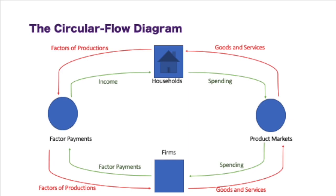Another thing to note here are product markets. Product markets are going to be like a store or the mall where you can go in and purchase different goods. Here you can see that households are spending in the product market, and in return they are getting the goods and services.